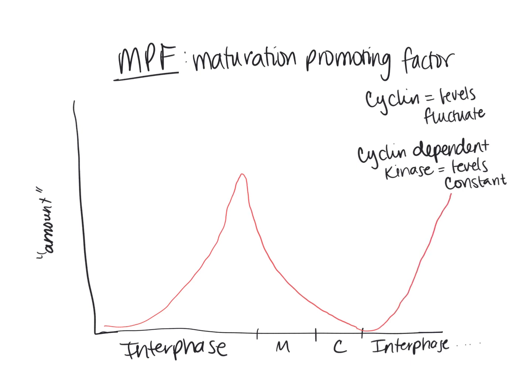Whereas with CDK, the levels remain constant — we would see just a constant line throughout all of the cell cycle.